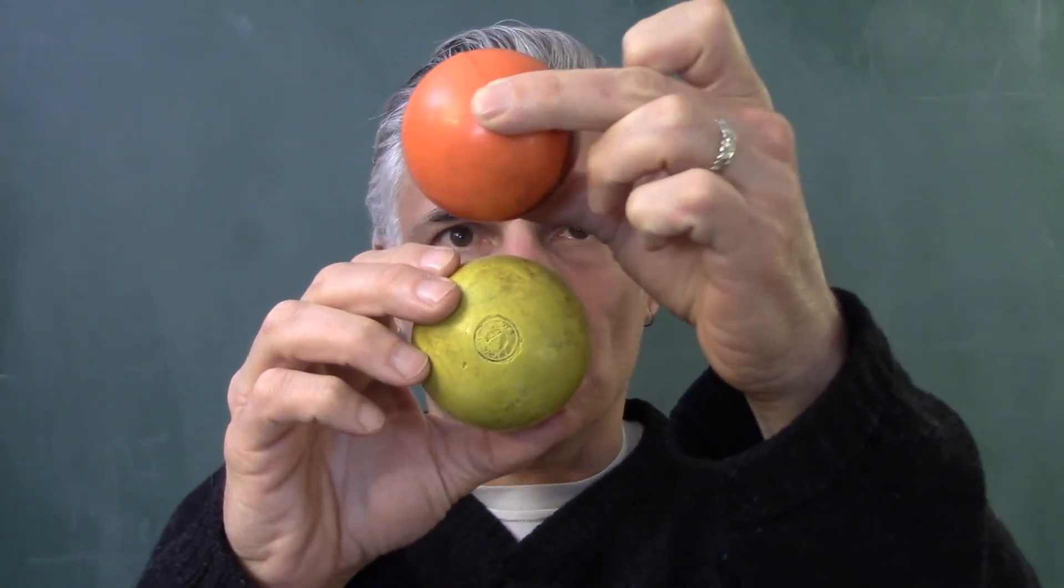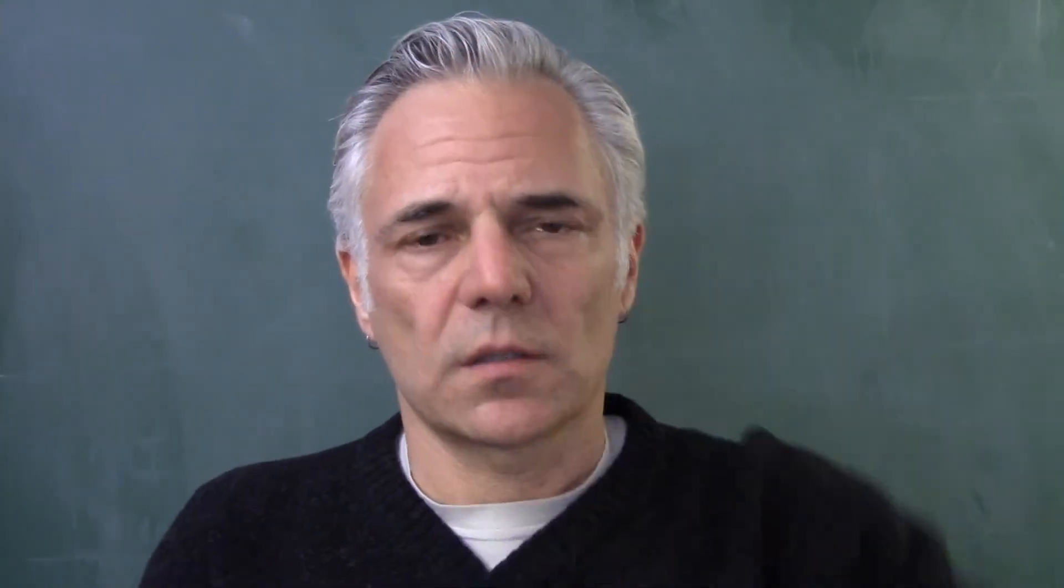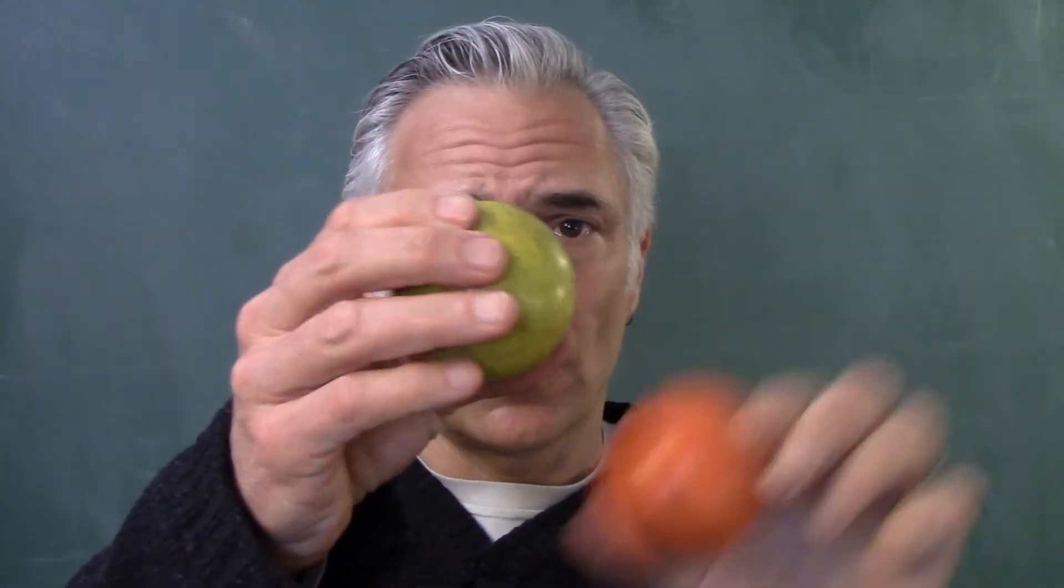So up here the Earth is moving in one direction, down here it's moving in the opposite direction. So at those two locations, the Earth is moving in different directions with respect to the ether.